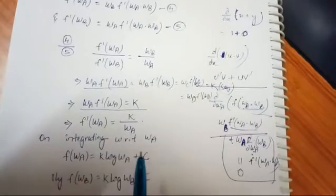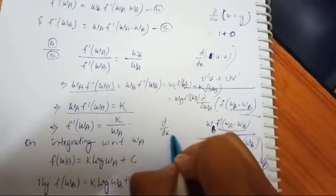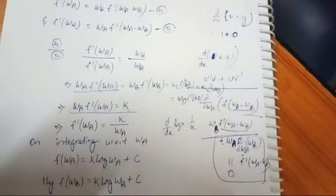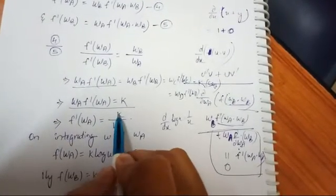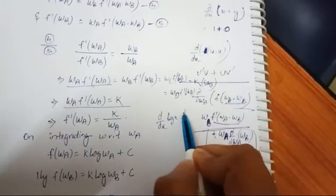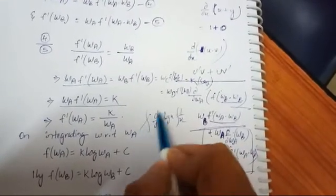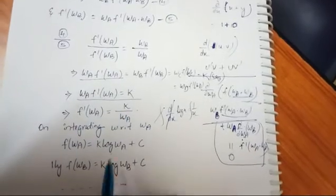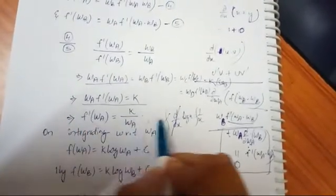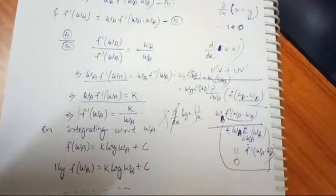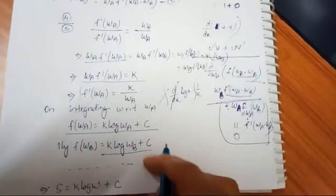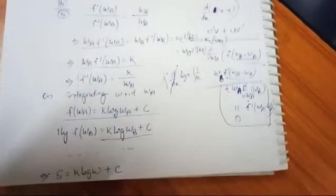Taking just the first part: W_A times F'(W_A) equals K, so F'(W_A) equals K divided by W_A. Now integrating with respect to W_A — recall that d/dx(log x) equals 1/x, so the integral of 1/x is log x. Therefore, the integral of K/W_A with respect to W_A gives F(W_A) equals K log W_A. Similarly, F(W_B) equals K log W_B, and so on for W_C, W_D, etc.